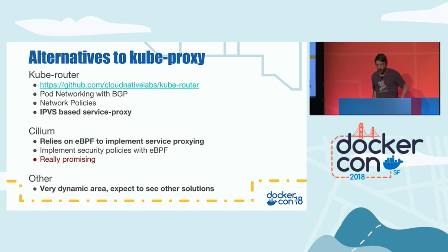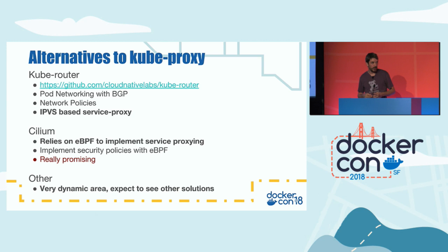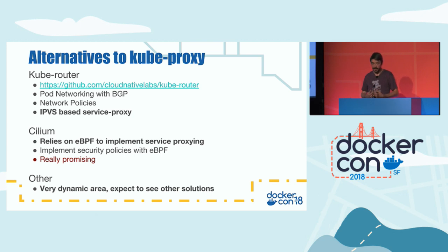There are also alternatives to kube-proxy. You can run a Kubernetes cluster without kube-proxy — for example, Kube-router provides pod networking and network policies but also includes its own service proxying using IPVS. Another very interesting tool is Cilium, which relies on eBPF to do service proxying, transforming service IPs into pod IPs directly in eBPF. This is really promising in terms of performance.